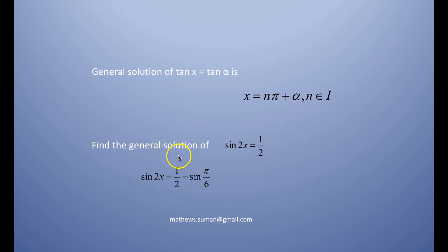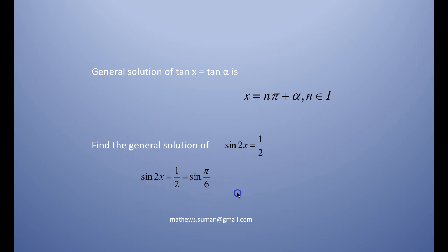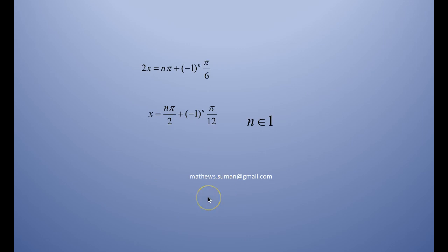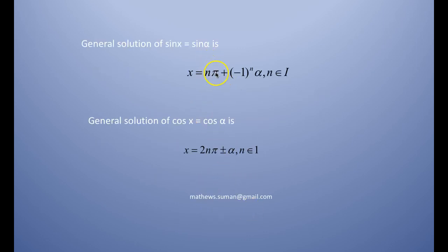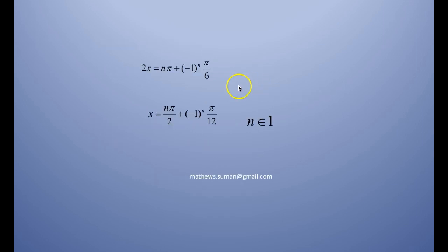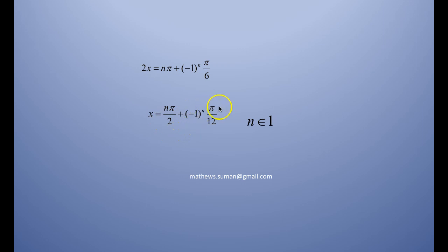Find the general solution of sin 2x = 1/2. Since sin(π/6) = 1/2, we have sin 2x = sin(π/6). Applying the general solution of sin x = sin α, we get 2x = nπ + (−1)ⁿ · π/6. Simplifying, x = nπ/2 + (−1)ⁿ · π/12, where n is an integer.